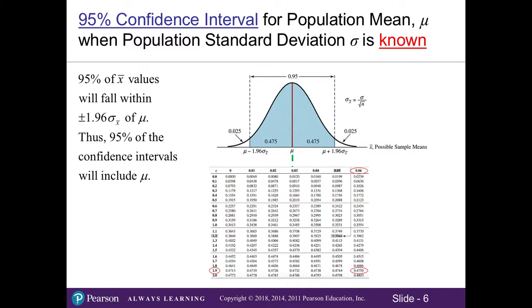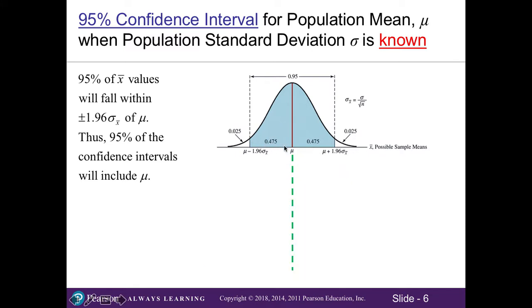That's why when you look at Appendix D, we don't see any negatives because the negative simply tells you that I'm on the left side of the curve. When I add 0.475 from both sides, I get 0.95 or 95%. What our 95% confidence interval tells us then is that 95% of the intervals will fall within the shaded area.